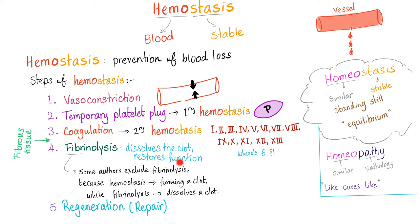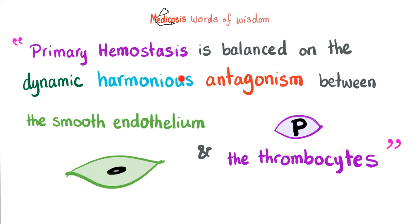We should dissolve the clot and restore normal blood flow, because the party is over. Primary hemostasis is balanced on the dynamic harmonious antagonism between the smooth endothelium, which wants the blood to flow, and the thrombocytes, which demand blood clotting.